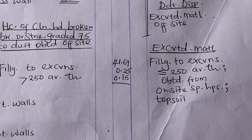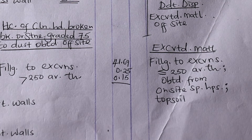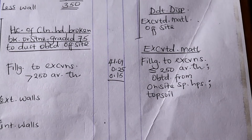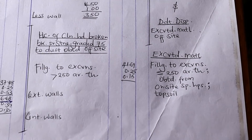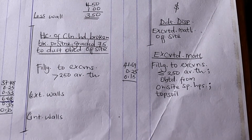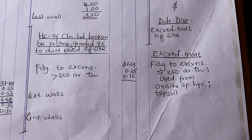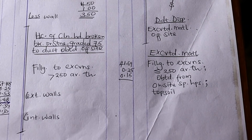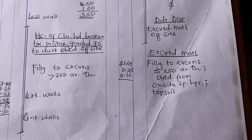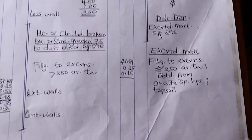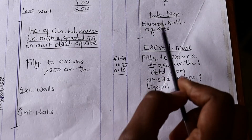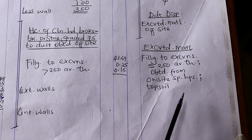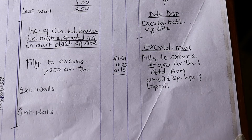The reason we deduct is: the first time we excavated the trenches, that soil was added to excavated material to be disposed away from site. Now we need some of that soil to backfill the outside of the trenches, so we deduct this volume from the soil that was supposed to be disposed off-site. That is why it is written as: deduct disposal of excavated material off-site.